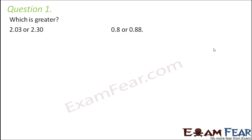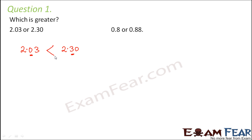Question number 1: which is greater, 2.03 or 2.30? Let us try to compare 2.03 and 2.30. We compare from left to right. 2 and 2 is the same. After the decimal, at the tenths place we have 0, and at the tenths place of 2.30 we have 3. So 3 is greater than 0, therefore 2.30 is the bigger number.